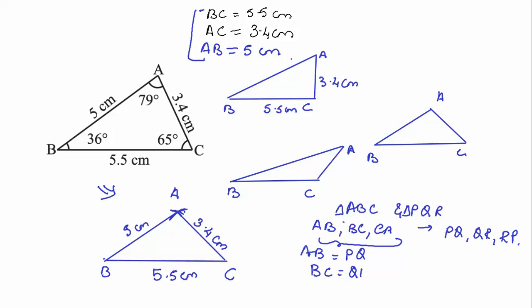Then I can say, if these measurements correspondingly, AB is equal to PQ, and BC is equal to QR, and AC is equal to PR, if these measurements are equal, all the three, in that case I can say triangle ABC is congruent to triangle PQR.